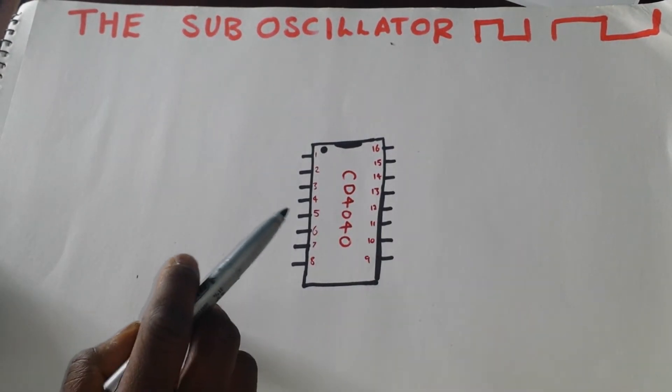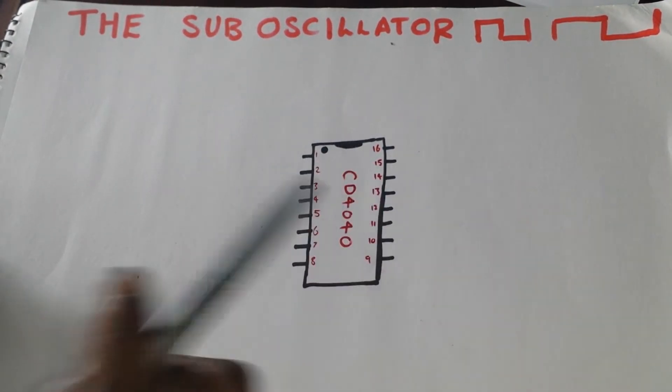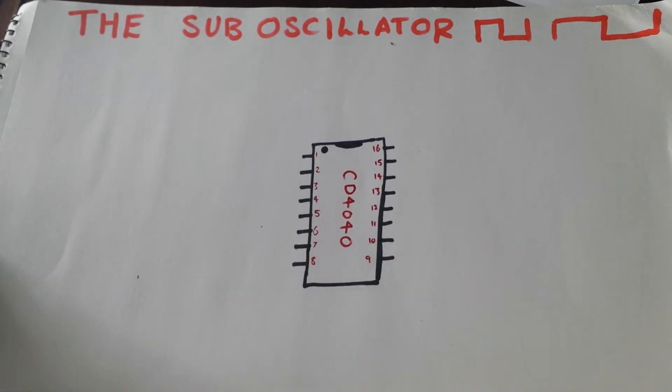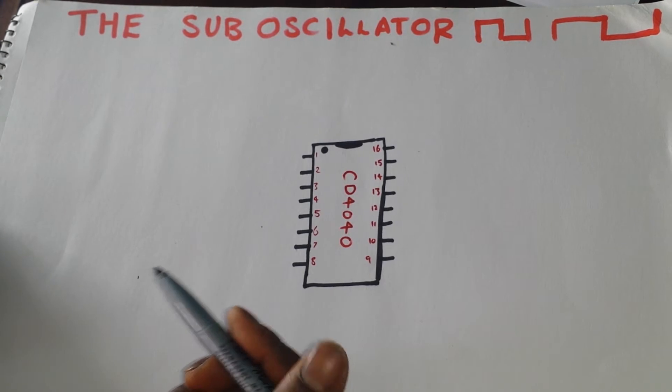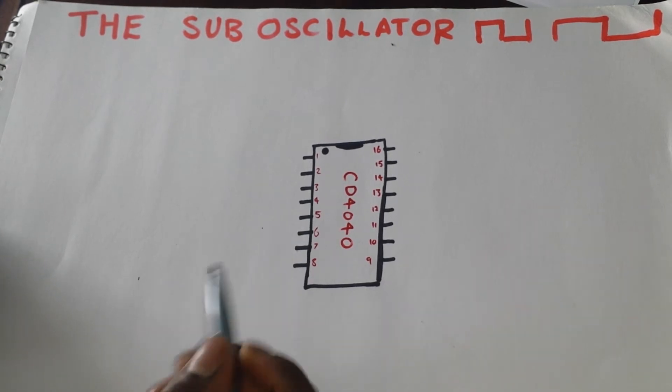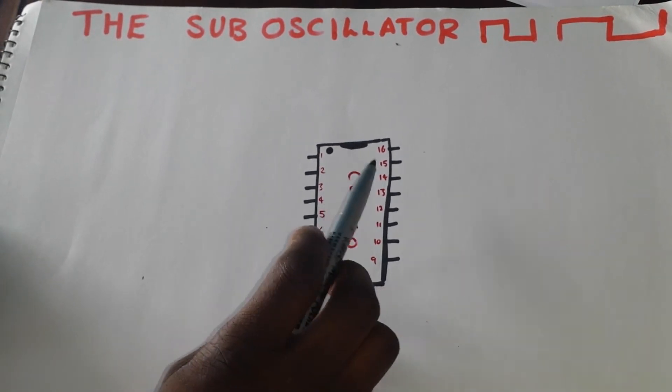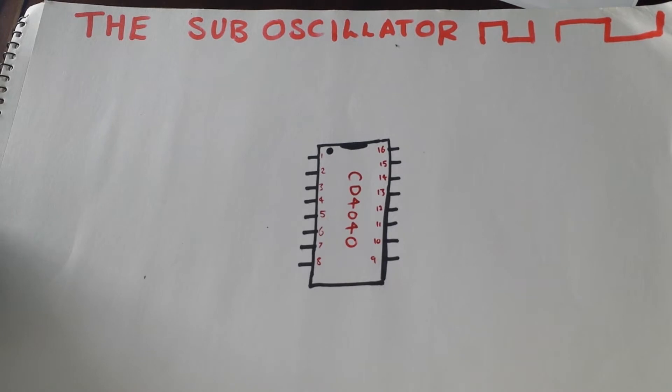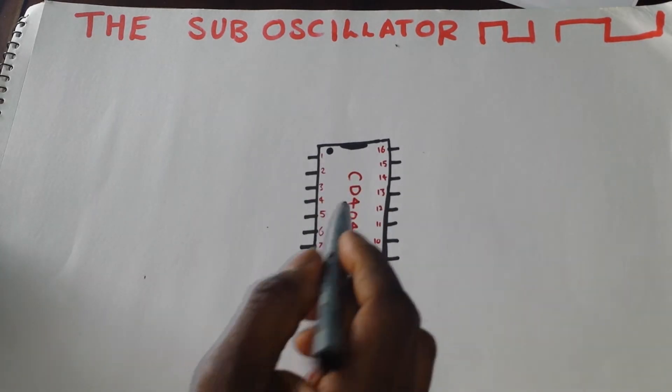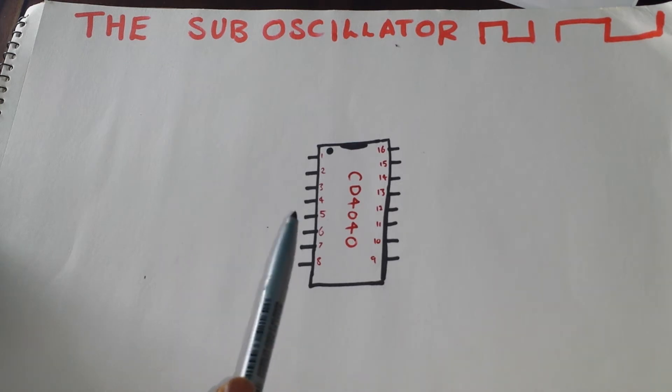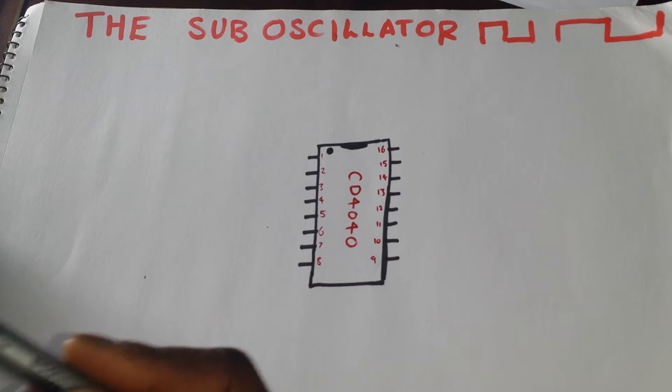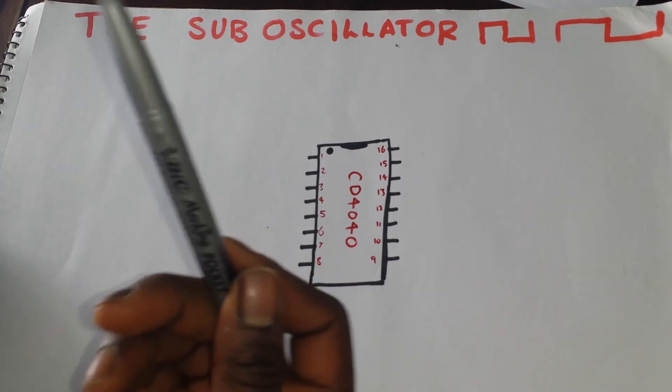So what we're going to use as the main ingredient, the main chip, is this one here which is known as the CD4040 which is a CMOS chip. I think it's either known as a decade counter or binary counter and there's quite several outputs on this chip where we get a half division, a 4th division, 8th division, 16th - goes up quite a lot.